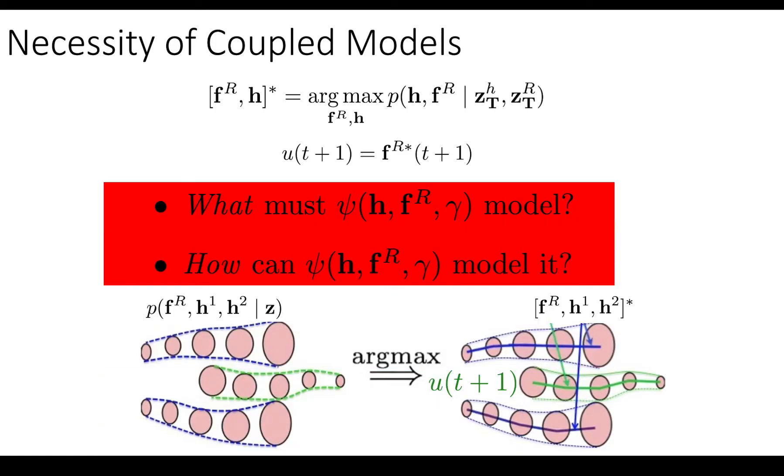And our core question in this paper is what must psi model if we want to avoid freezing robot problems? And how can psi model it? And in particular, the question how is about what are the permissible parameters, statistically speaking?